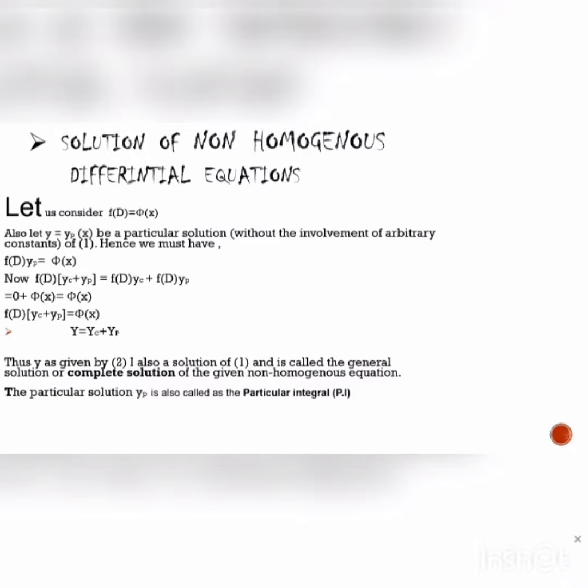Thus, y as given by equation 2 is a solution of equation 1 and is called the general solution or complete solution of the given non-homogeneous equation. The particular solution yp is also called the particular integral.